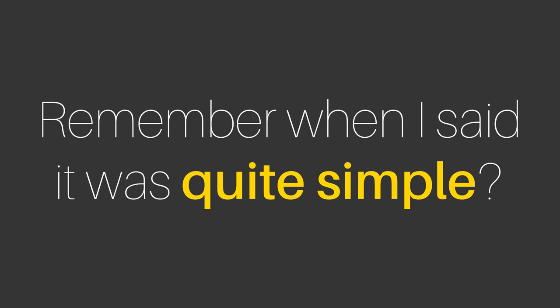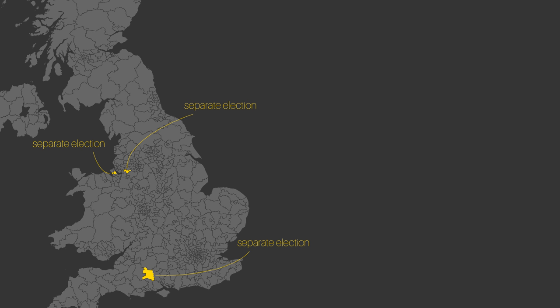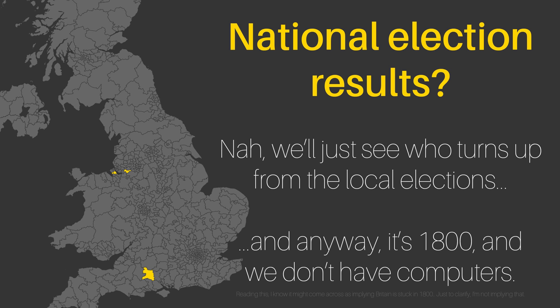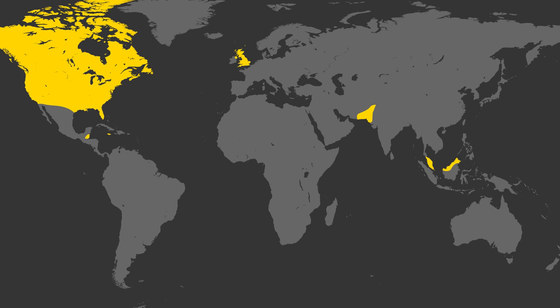The really great advantage of first-past-the-post is in how simple it is to execute. Because every constituency effectively holds its own election, there's no need to aggregate the election results nationally, which really helps in a pre-digital society. This might explain why most countries that adopted FPTP did so a long time ago.